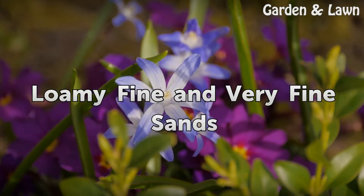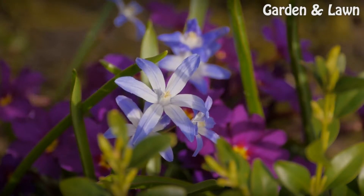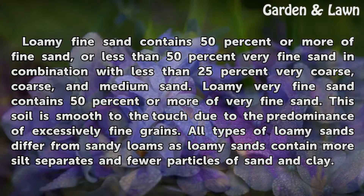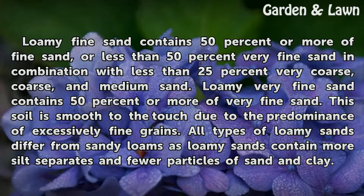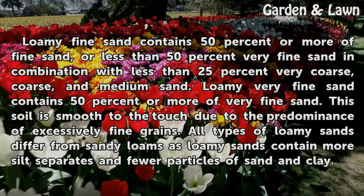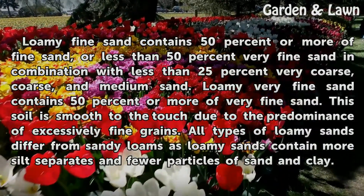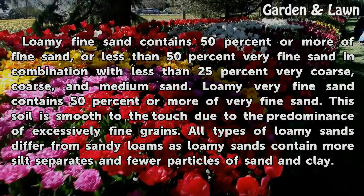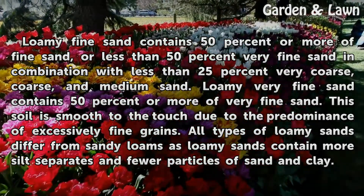Loamy fine sand contains 50% or more of fine sand, or less than 50% very fine sand in combination with less than 25% very coarse, coarse, and medium sand. Loamy very fine sand contains 50% or more of very fine sand. This soil is smooth to the touch due to the predominance of excessively fine grains. All types of loamy sands differ from sandy loams as loamy sands contain more silt separates and fewer particles of sand and clay.